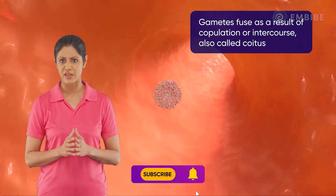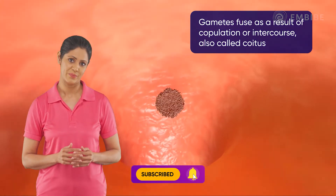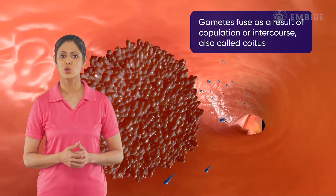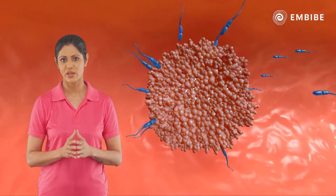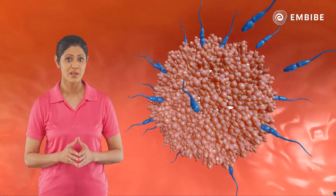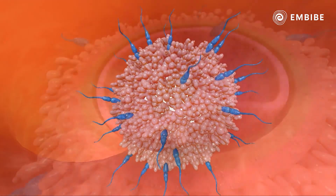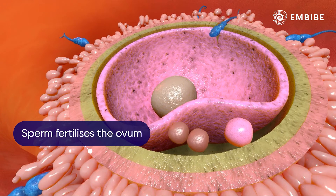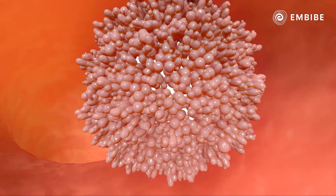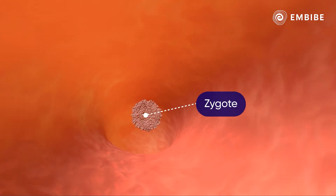As a result of copulation or intercourse between a male and a female, the two gametes meet each other. This process is also known as coitus. Post coitus, the deposited sperms swim upwards towards the ovum. Here the sperm fuses or fertilizes the ovum to form a diploid cell containing 46 chromosomes, called a zygote.